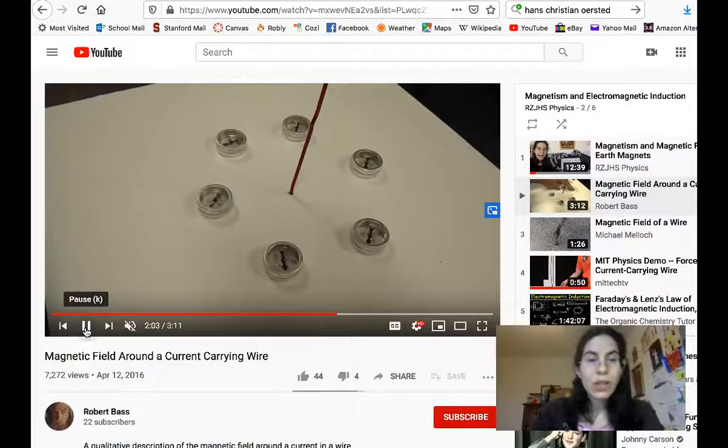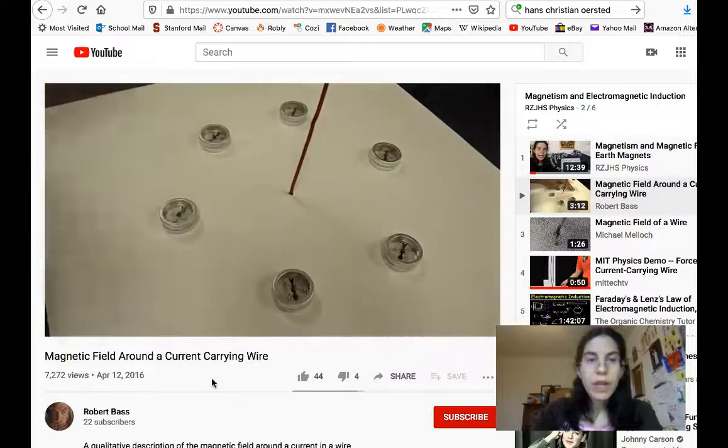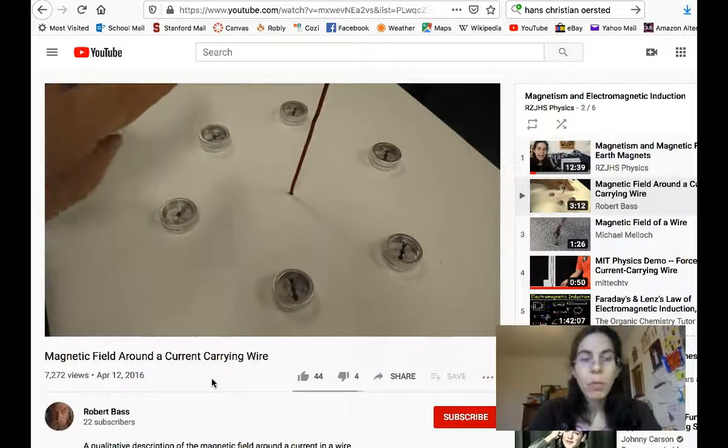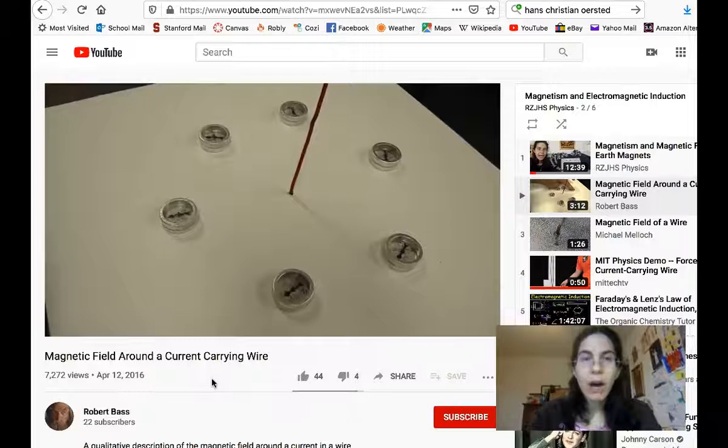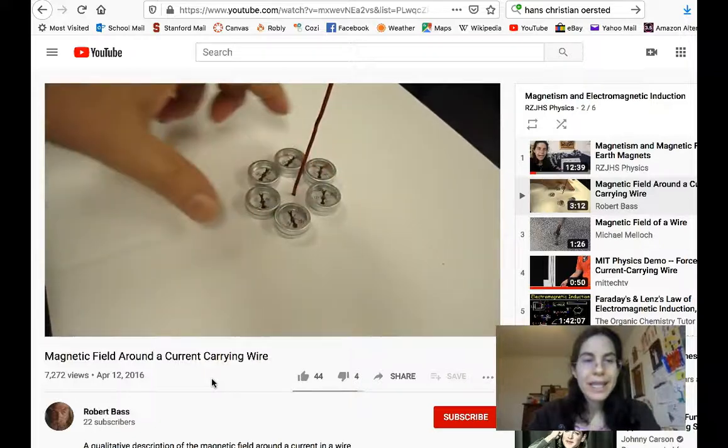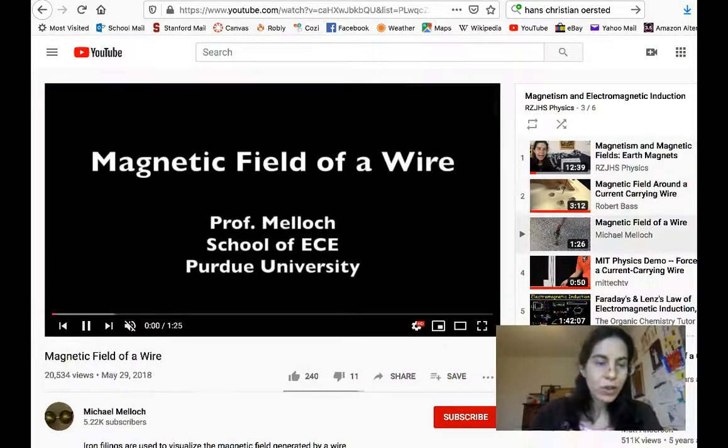We can set up compasses around a current carrying wire, send a current through the wire, and move the compasses around to different locations to measure the direction of the magnetic field. Compasses do have arrows. They have one end that points north and one end that points south. Interestingly enough, if you'll go over your physics, you'll realize that it's the south pole that points north and the north pole that points south.